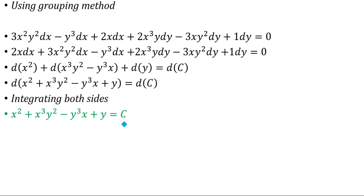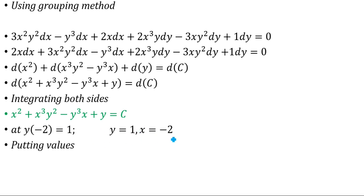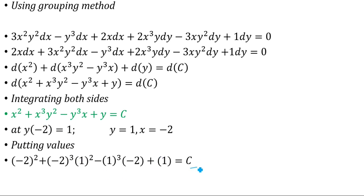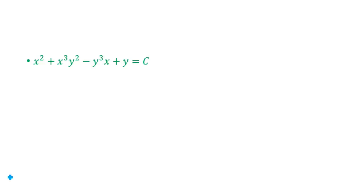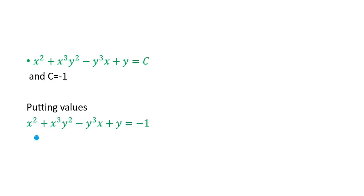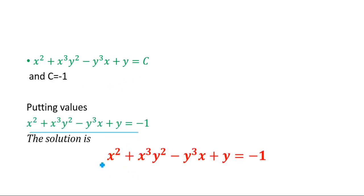Applying the initial condition y(−2) = 1, meaning x = −2 and y = 1, we substitute into the equation. This gives us C = −1. Putting the value of C back into the equation, we get the final solution: x² + x³y² − y³x + y = −1.